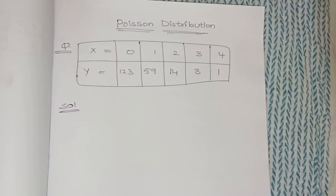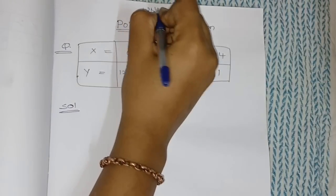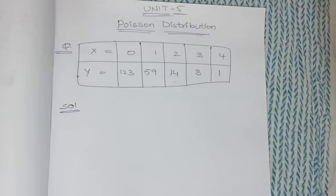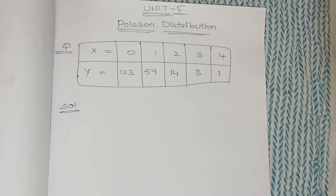Hello all, welcome back to our channel. In this video we will discuss unit number five important problematic questions in Business Statistics 2, that is Poisson distribution. In unit number five, Poisson distribution will be easy and most repeated problematic question in Part B. Either we may expect one theory question and one Poisson distribution problematic question from Part B. The remaining binomial distribution problematic questions you better skip, because it will be difficult to understand.